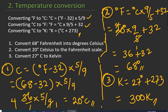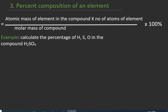The third formula is percent composition of an element. The formula for calculating percent composition of an element, as you can see on the board, is: atomic mass of the element in the compound times number of atoms of the element, divided by molar mass of the compound, times 100%. Let's apply this to make it clear.